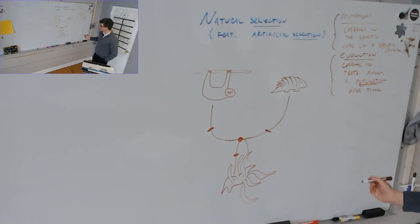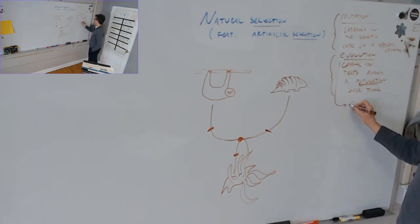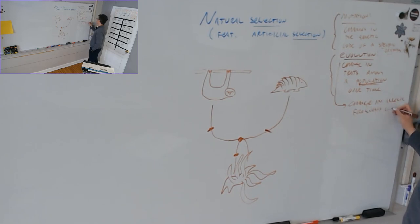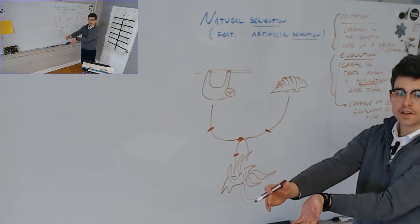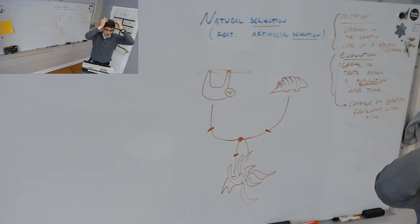I've heard it defined as a change in allelic frequency over time. What is, we talked about this last time, what's an allele? Let me remind you. It's a gene that codes for a trait. In fact, it's the other way around. It's a trait that is coded for by a gene. Remember we talked about last time how you can have traits that are genetic traits, like your hair color, and you can have traits that are non-genetic traits.